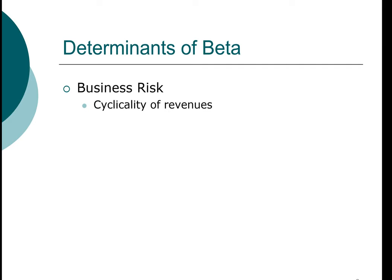Companies that have low cyclicality in their revenue typically sell essential items — for example, grocery stores like Walmart, or fast food companies like McDonald's. These are companies whose revenue doesn't depend on whether people feel they have extra income from a booming economy to purchase their products. So cyclicality of revenue determines the top line — the revenue being generated — and how variable that revenue is.